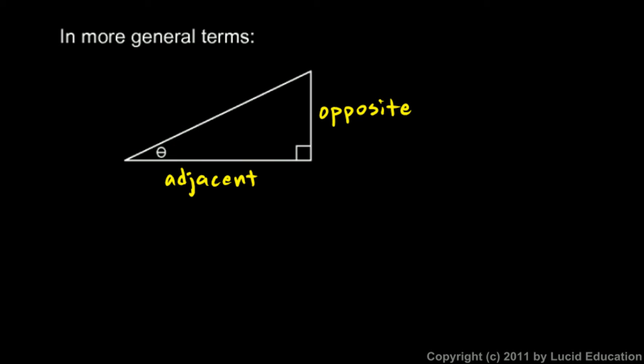This side right here is adjacent to this angle. Now if you think of this angle here, you think of the angle as this space in between or this span, you could really say that this side and this side are both adjacent to this angle. So why do we call this one the adjacent and not that one?